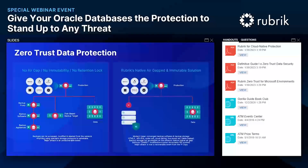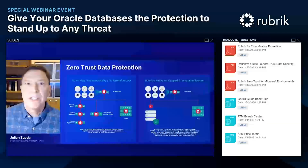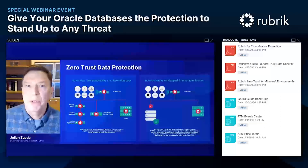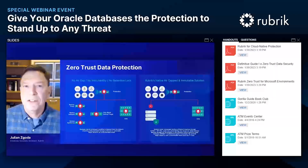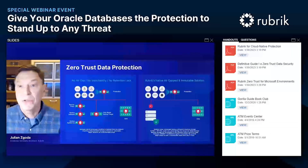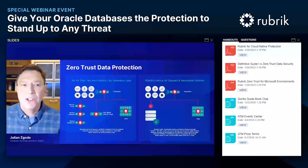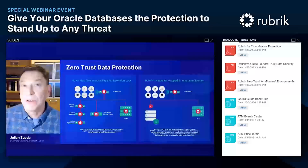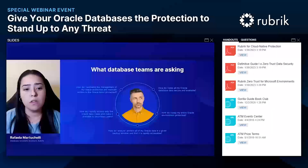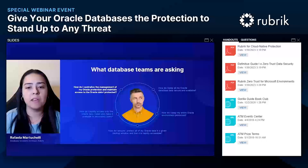Rubrik achieves this with Zero Trust Data Protection along with an air-gapped, immutable storage system. Backups land in the local Rubrik cluster, then they are converted into an immutable patch file, moved across a logical air gap, and stored in an append-only file system designed for storing backup data. When you need to access your backups, a copy is materialized across the air gap and presented to the host being restored in less than a minute. The original backups remain in the vault untouched, ensuring your backups are always safe and available no matter what happens.